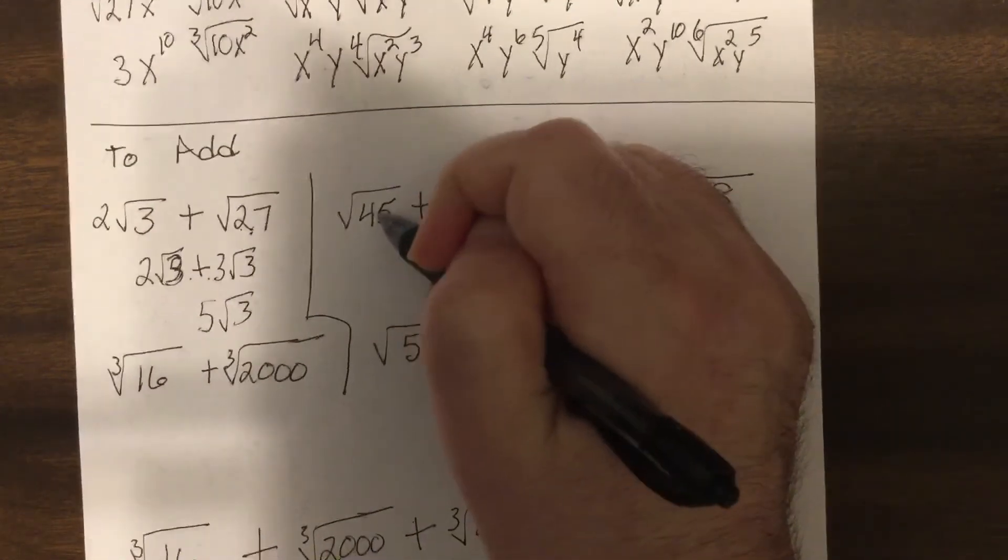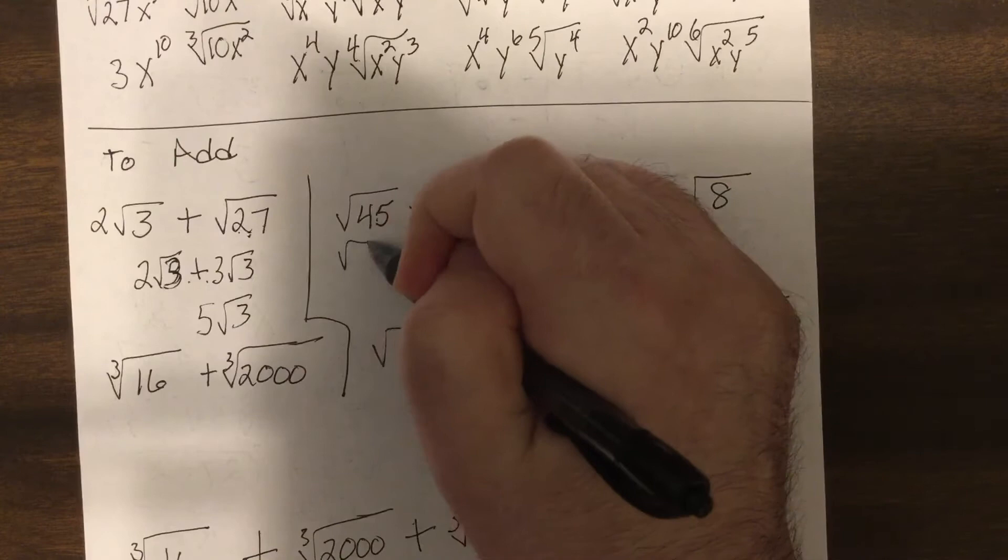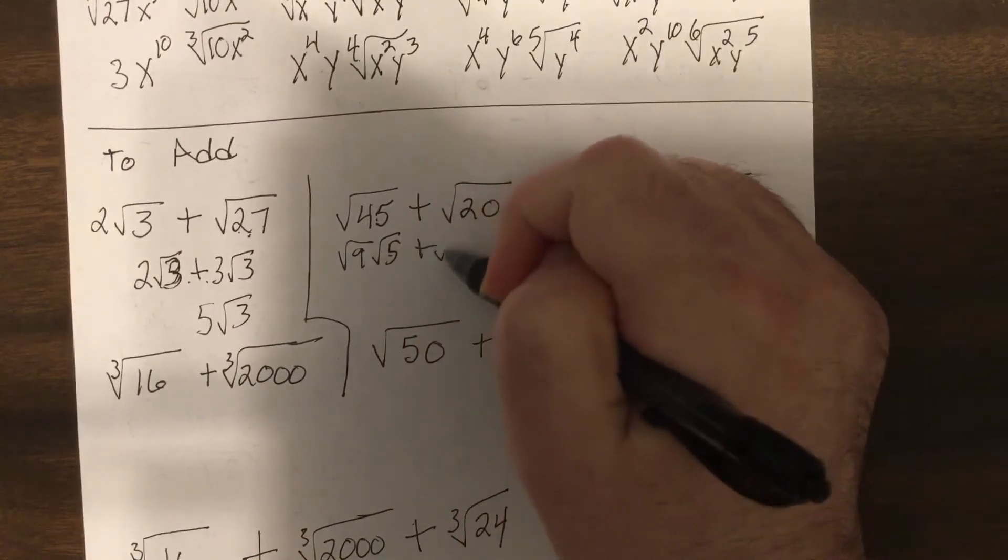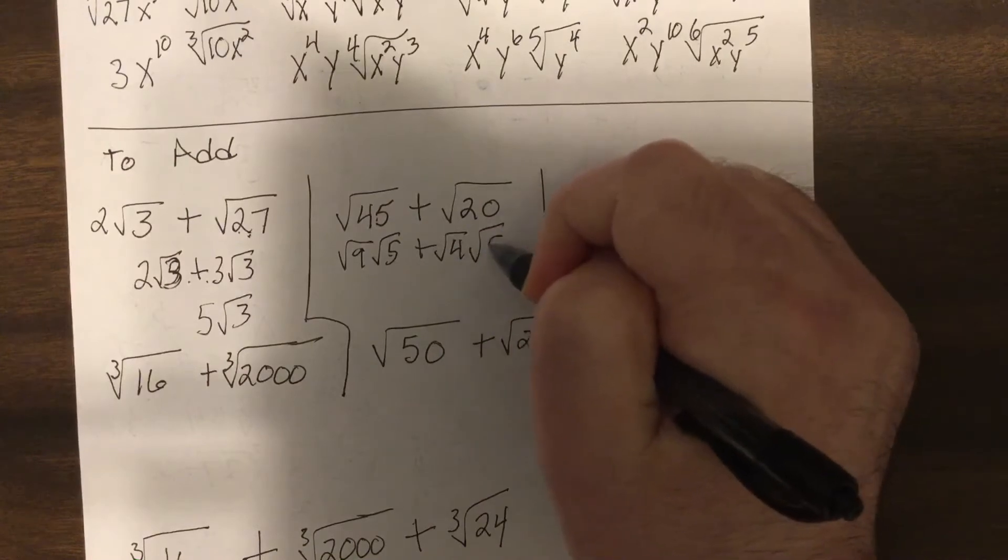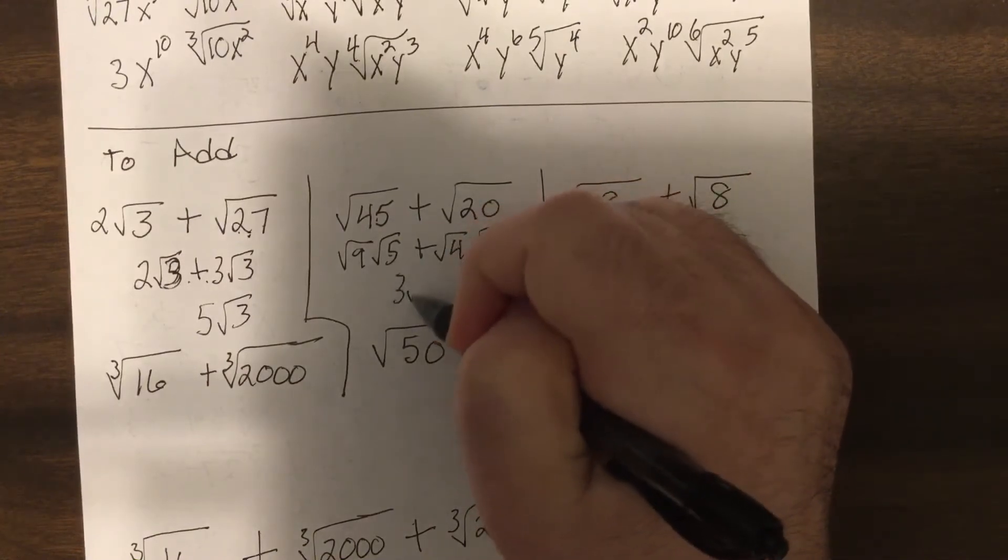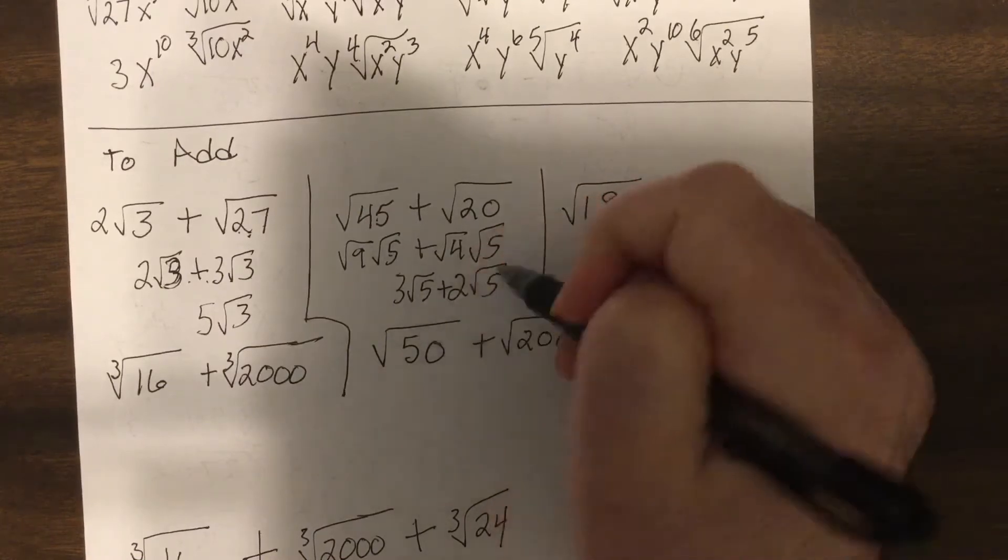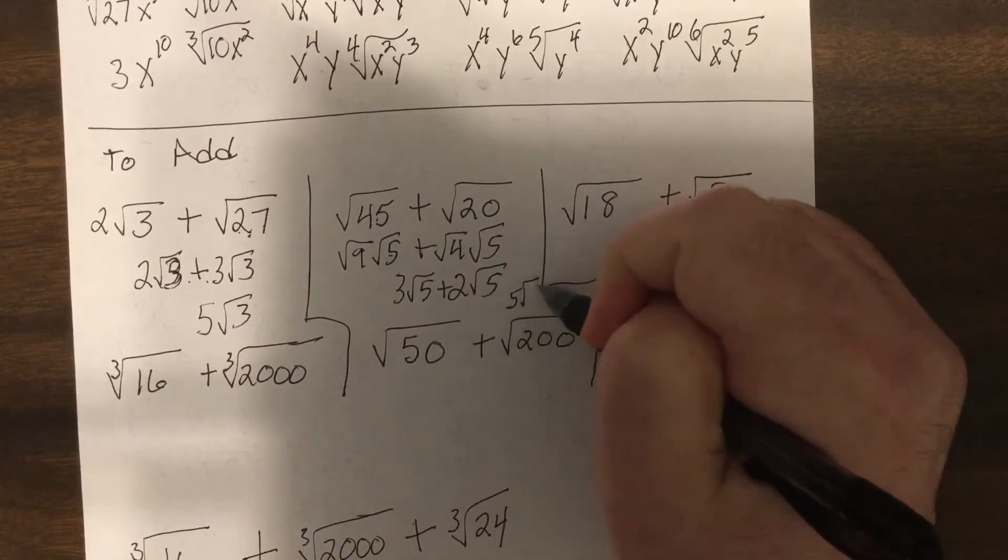So this one, what perfect square root is in the 45? Well, that would be nine and then fives left over. 20 is four and five. So this would be three square root of five plus four, two square root of five, excuse me. And that is five square root of five.